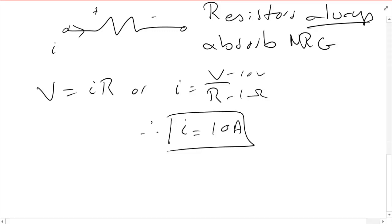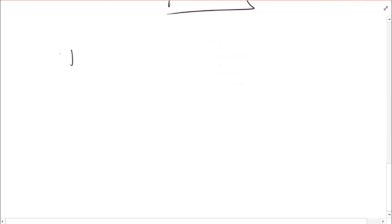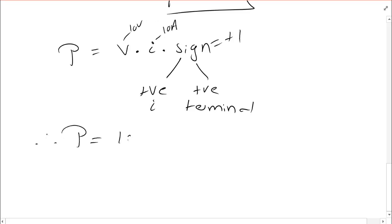The final question we need to answer is, what is the power through the resistor? Remember that power is V times I times the sine. In our case, we have positive current entering positive terminal. So, sine is positive 1. Voltage is 10 volts, and current is 10 amps. Therefore, the power in my resistor is 10 times 10, or 100 watts.